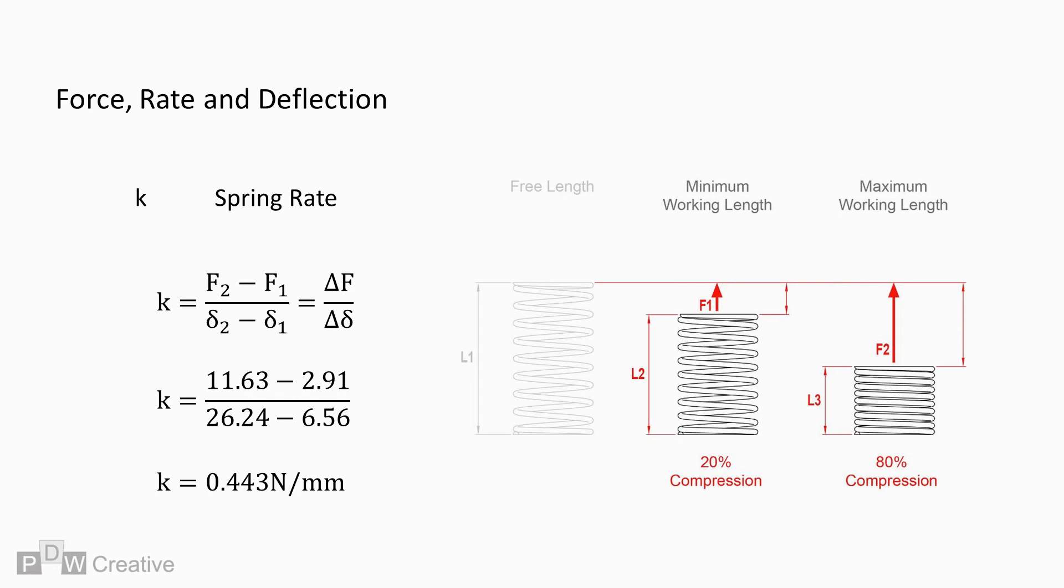An alternative method of calculating spring rate is to calculate by the modulus of rigidity times wire diameter to the power of 4 divided by 8 times the mean diameter to the power of 3 times the number of active coils. And this gives us 0.443 N per mm again.